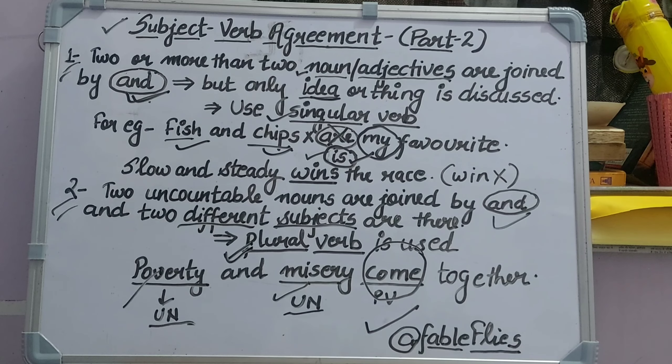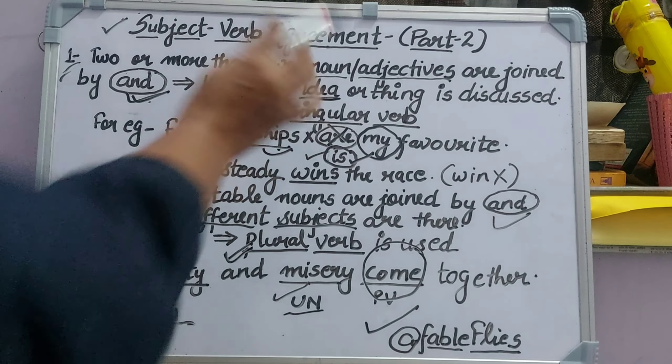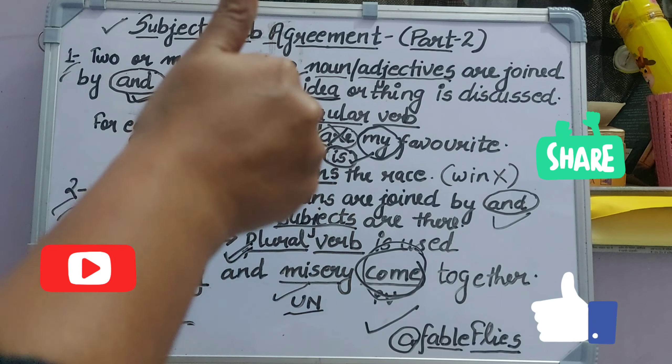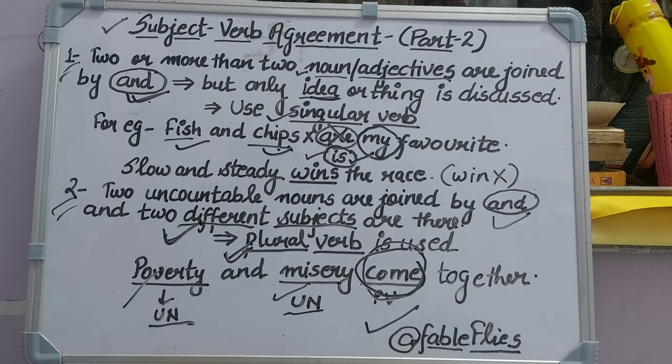Part 2: Two uncountable nouns. If two uncountable nouns are joined and they represent two different subjects, we always use a plural verb. For example: 'Poverty and misery come together' — poverty is uncountable and misery is uncountable, and they are two different subjects, so we use a plural verb. To summarize: if two or more nouns discuss the same single idea, use singular verb; if two different subjects are discussed, use plural verb.